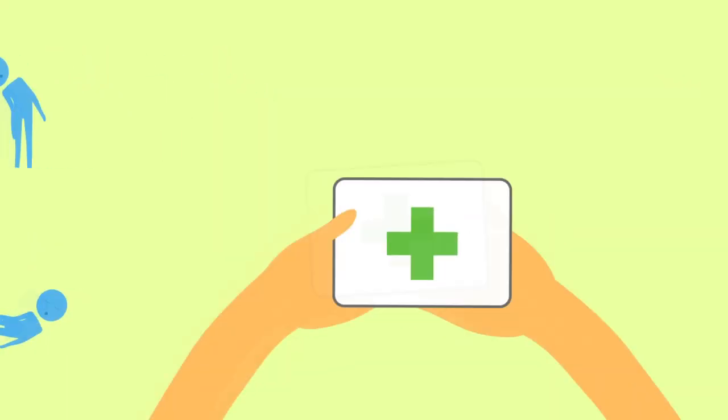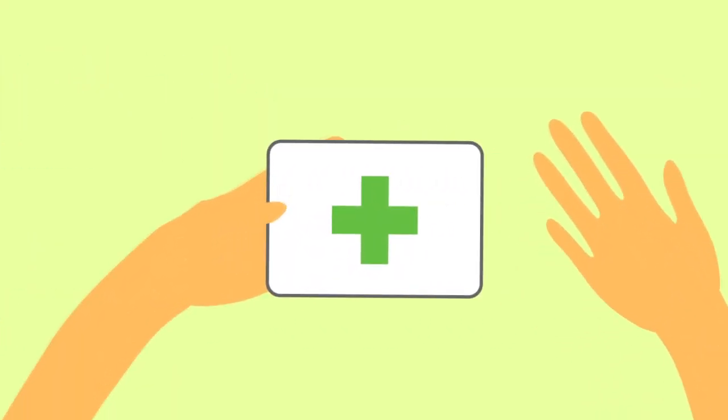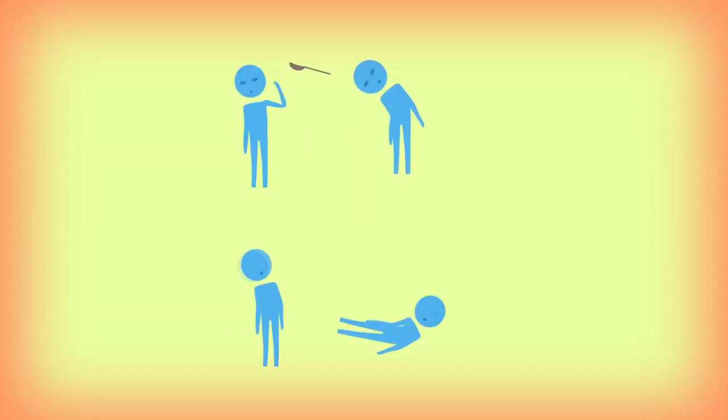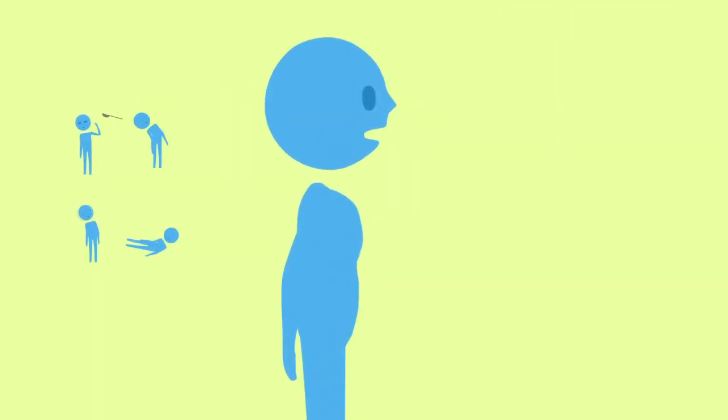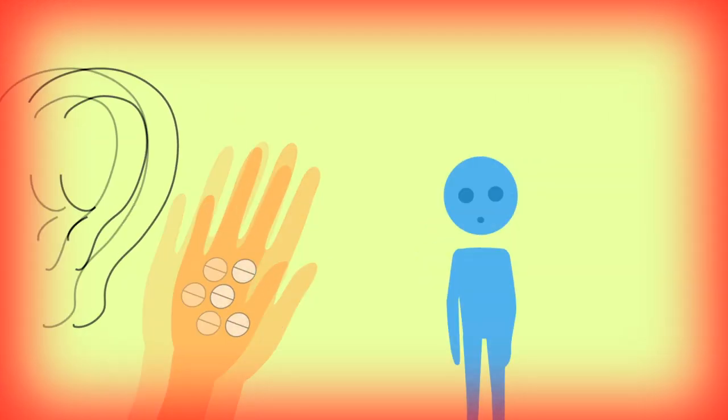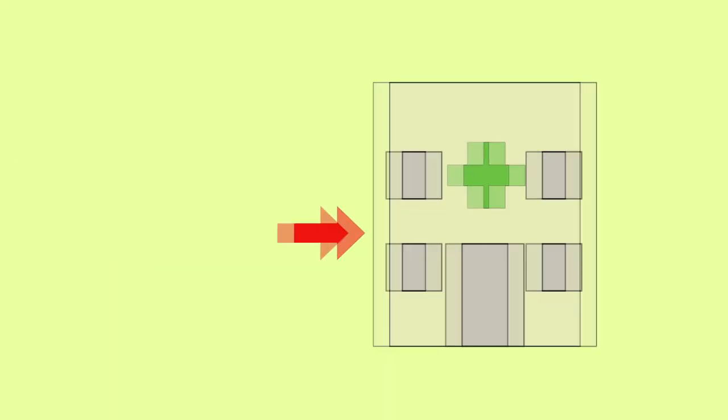Antibiotic treatment can only be initiated if the community health worker has a drug pack available. If the child has general danger signs, chest indrawing or strider when calm, give the child their first dose of antibiotics and refer to hospital immediately.